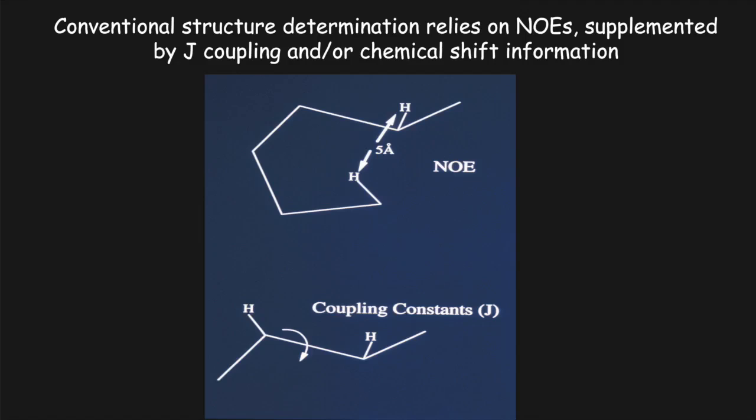We get enough of those distance restraints — typically a thousand or a couple of thousand for a small protein — and one can reconstruct the polypeptide backbone conformation compatible simultaneously with all those distances. J-couplings are sometimes used as a complement, giving dihedral angles between adjacent inter-nuclear bonds. Similarly, chemical shifts can be translated into loose restraints for backbone torsion angles phi and psi. But all three types of restraints report strictly on local conformation.